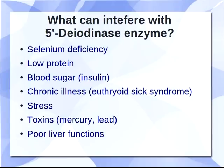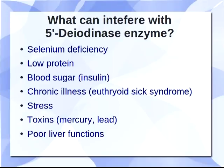Let's go over what things interfere with the 5'-deiodinase enzyme. Selenium deficiency, I mentioned before. Low protein diets — I know that there are experts who promote low protein diets and they can help some people in certain circumstances. However, many other people will not feel good on low protein diets, and sometimes people don't realize how little protein they are getting. I've seen it where someone comes in feeling absolutely horrible, no energy, they feel like they can't function. You look over their diet, you see there's low protein, you get them to add protein, and they start feeling a lot better quickly. If you don't have enough protein, the body doesn't have enough basic substrate for all metabolic processes, so it slows down by lowering metabolic rate — that means lowering thyroid hormone. It's that simple.